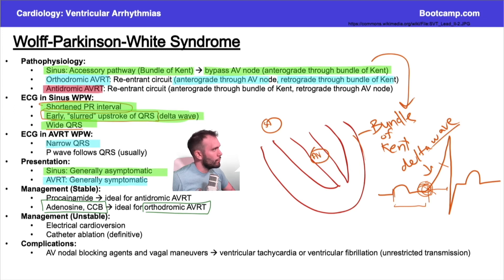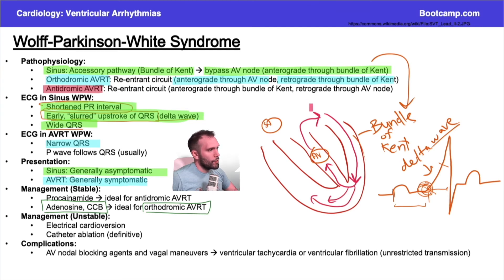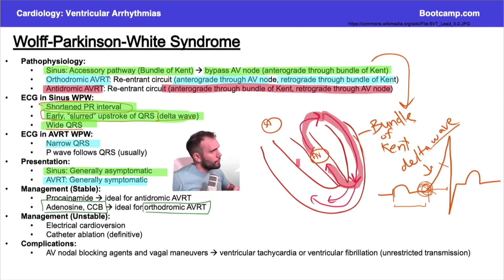In antidromic AVRT, the whole cycle runs in reverse. The signal goes down the Bundle of Kent as initially seen, but reverses back up through the AV node to create the cycle - the entire re-entrant circuit goes anterograde through the Bundle of Kent and retrograde back up through the AV node. That's antidromic, because it's going anti to the normal physiologic conduction direction through the AV node. Why would you not want to give adenosine or calcium channel blockers to a patient with antidromic AVRT?